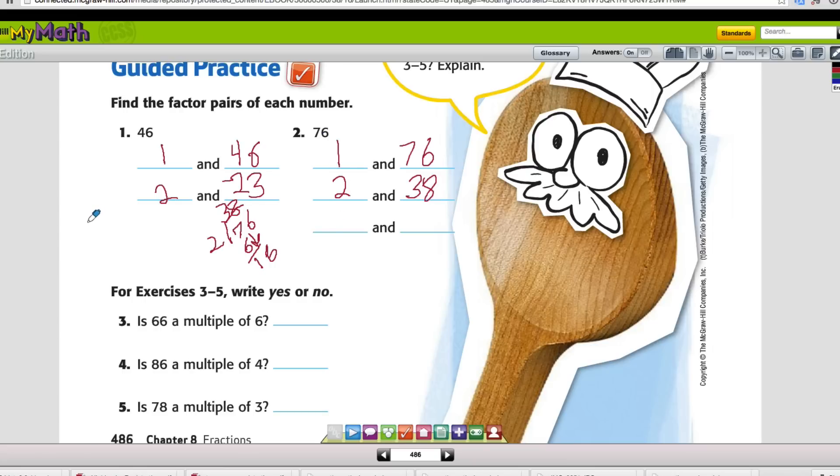Let's check 4 though. 4 goes into 76. 4 goes into 7 one time. 1 times 4 is 4. 7 take away 4 is 3. We bring down the 6. 4 times 9 is 36. So it also goes 4 and 19 times.